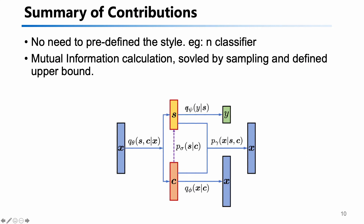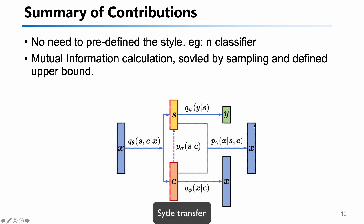To conclude the contributions of this paper: first, there is no need to pre-define the number of styles before training. Second, when calculating mutual information, the paper defines a new upper bound of mutual information to help calculate and back-propagate. After training this module, we get an encoder, and we can use both s and c to generate new output, then change s or c to get a different output.